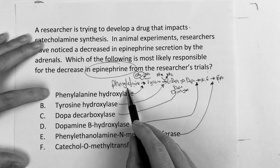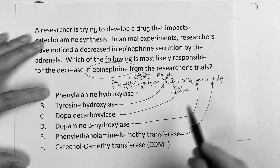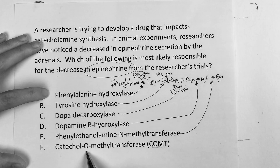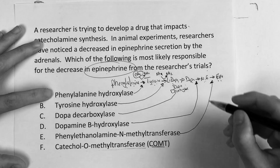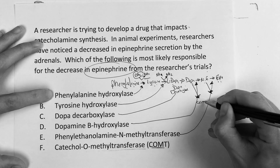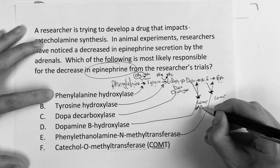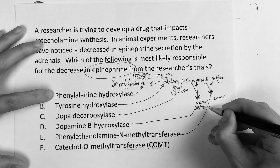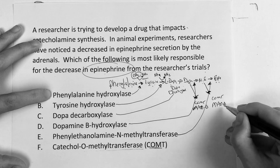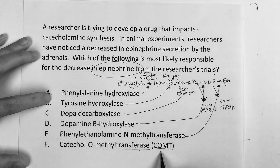So again: phenylalanine to tyrosine, L-DOPA, dopamine, norepinephrine, epinephrine. And then we have COMT — catechol-O-methyltransferase — which helps break down dopamine and norepinephrine. And we also have MAO-B and MAO-A coming into play for that breakdown as well.